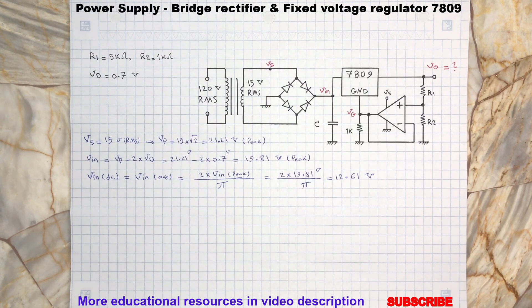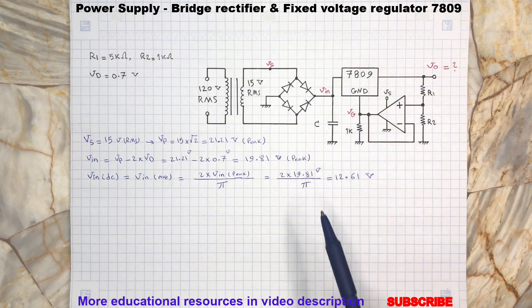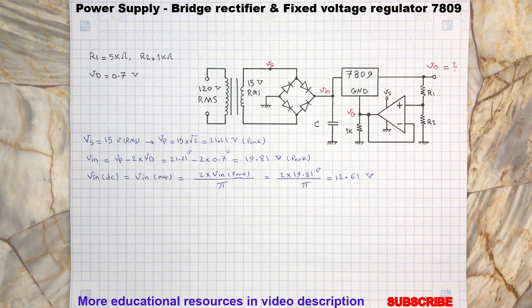To determine the output voltage value for this circuit we will need to know the voltage value of the 7809 ground terminal, also called VG here. So, let's write the voltage relationship between output and the ground terminal.